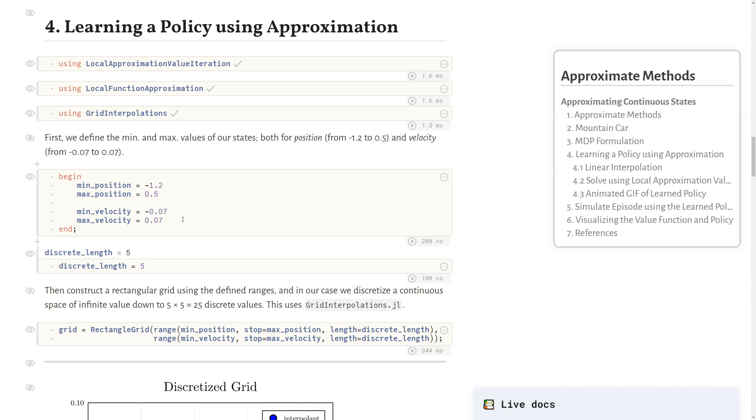We want to define how fine we discretize our state space, and we'll say for each of these we want five values in between these ranges. Using the grid interpolations package, we can define a rectangular grid that is a range from the min position to the max position with some discrete length of five, and the same range of the min velocity and max velocity with a discrete length of five. This turns a continuous space with infinite number of possibilities down to just 25 discrete values.